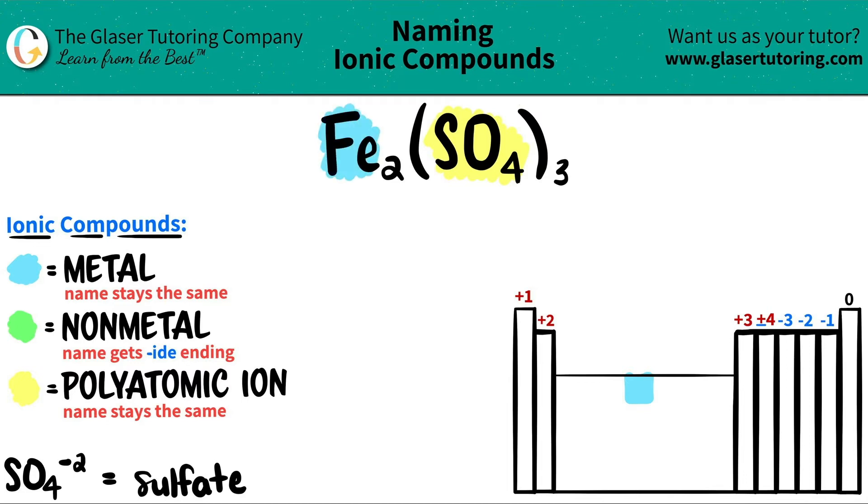And now we're ready to name. The metal name comes first, and that name always stays exactly the same. So iron would just be iron. Now we're dealing with the polyatomic and that name always stays the same. That's why you got to memorize them, because they're not on the periodic table. So this would be sulfate.